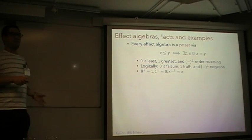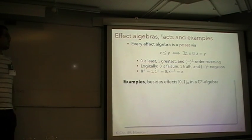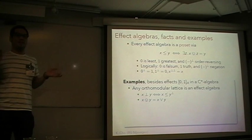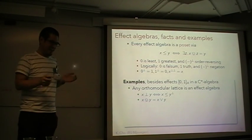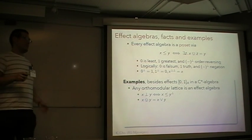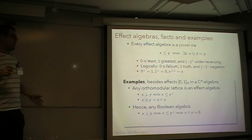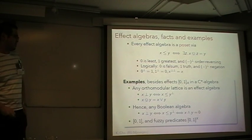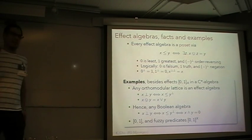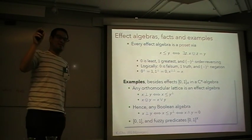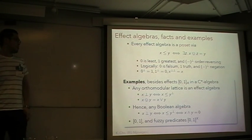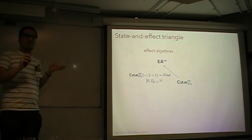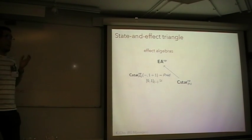A basic fact about effect algebras is that every effect algebra is always a poset in a natural way. Then zero is the least element and one is the greatest, and the orthocomplement is order-reversing. So we can consider an effect algebra as a logical structure where zero is falsity, one is truth, and the orthocomplement is negation. In that case we always have double negation. In fact, any orthomodular lattice is an effect algebra, so effect algebra is a generalization of orthomodular lattices. A simple example is the unit interval, and another is fuzzy predicates — the set of functions from a set to the unit interval.